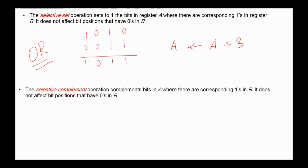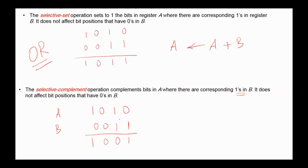Next, the selective complement operation complements bits in A where there are corresponding ones in B. It does not affect bit positions that have zeros in B. For the same example, A is 1010 and B is 0011. The bits in A where B has ones are complemented, and from the truth table you can note that the selective complement operation is just an exclusive OR operation — XOR.